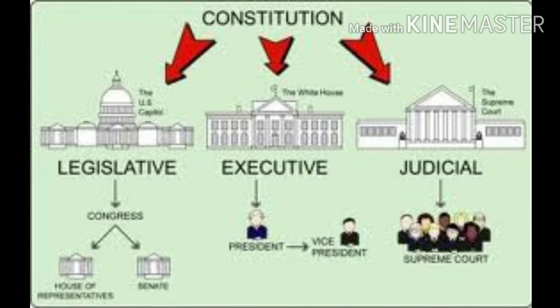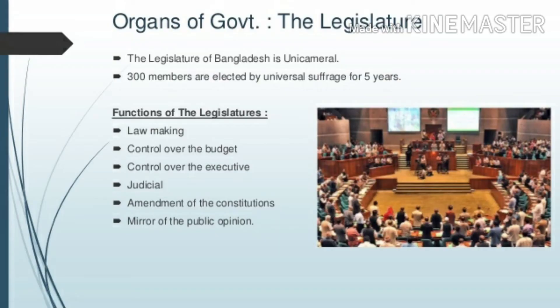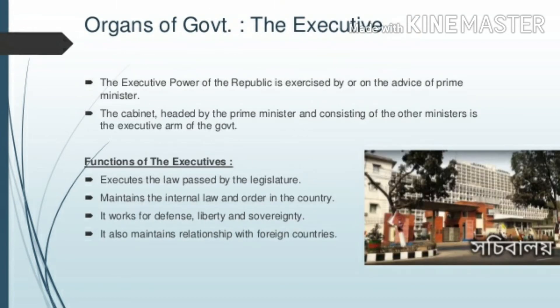Legislature consists of Lok Sabha and Rajya Sabha. It is the functional law-making body. It has control over the executive and judiciary. Amendment of the constitution is done by the legislature. Public opinion is also expressed in the legislature — in the parliament and legislative assembly.